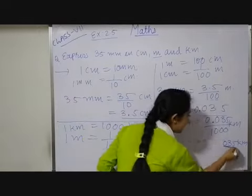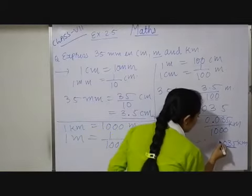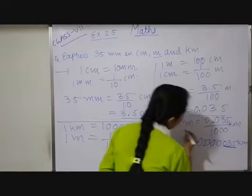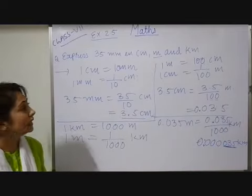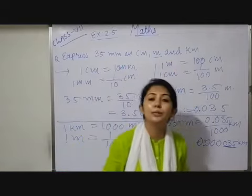These numbers after decimal were there previously, I keep as it is. Now, three more zeros: 1, 2, 3, and then decimal, giving 0.000035 kilometer. So, like that you can convert millimeter into centimeter, centimeter into meter, and meter into kilometer.